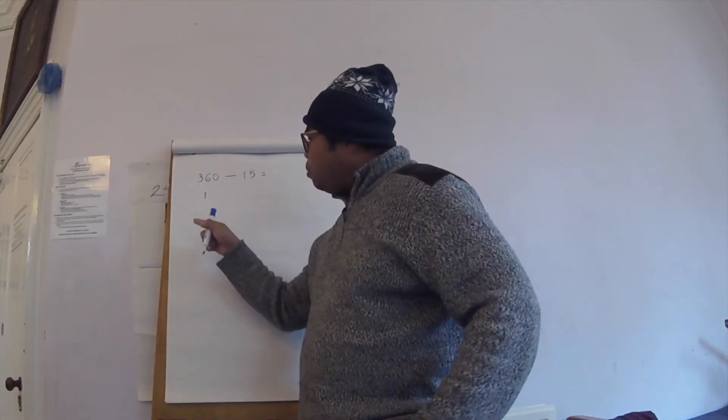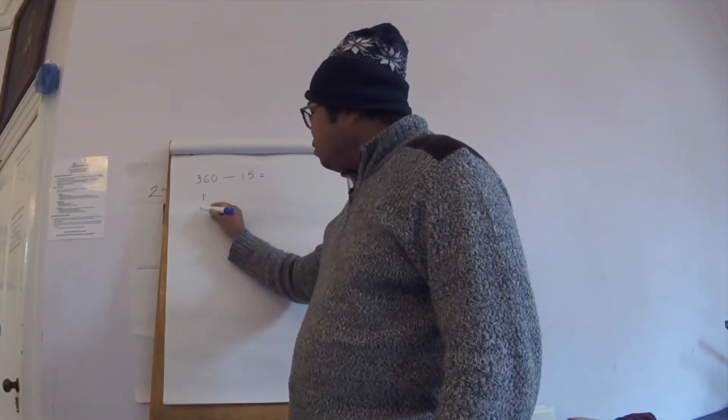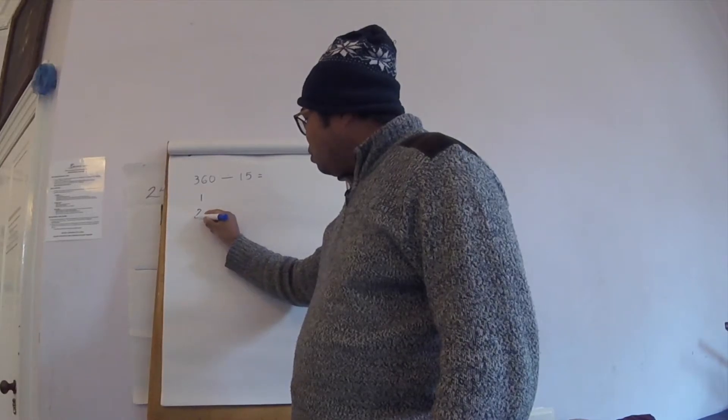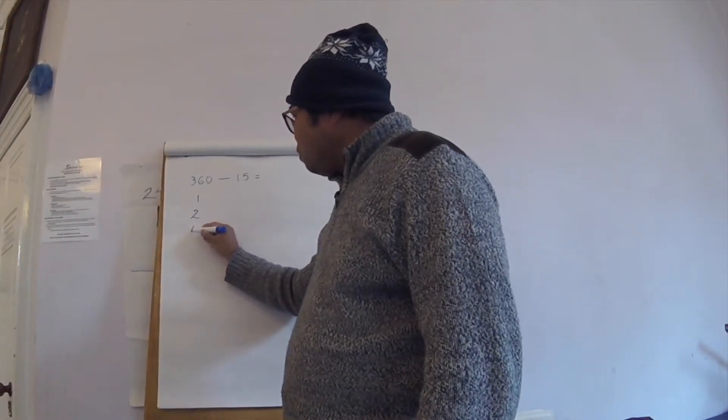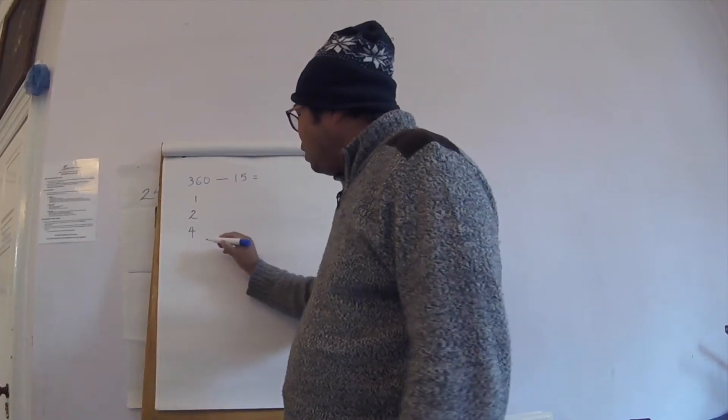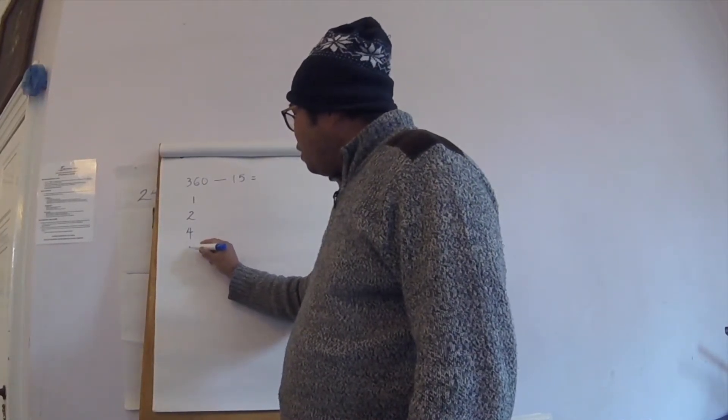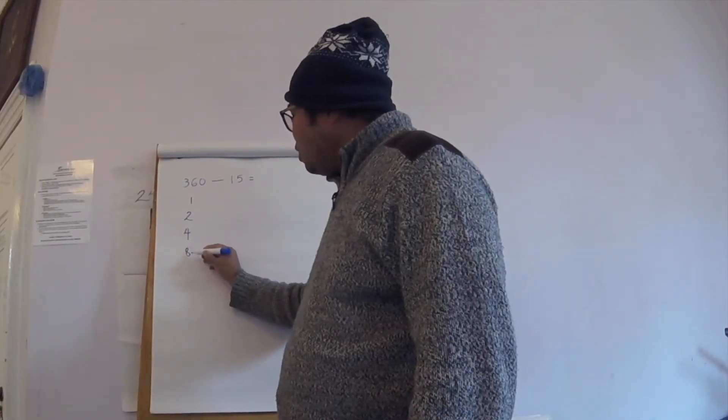Let's go to the simple method, it's doubling. What's double one? Two. What's double two? Four. What's double four? Eight. And double eight? Sixteen.